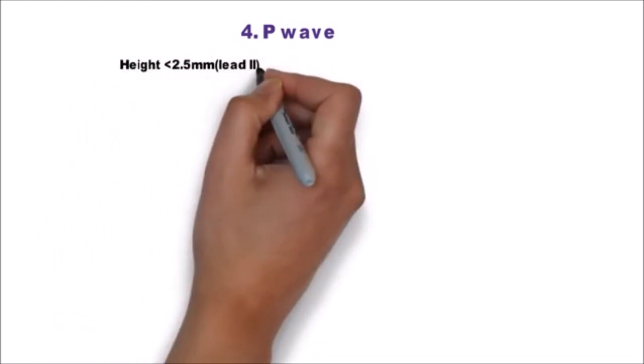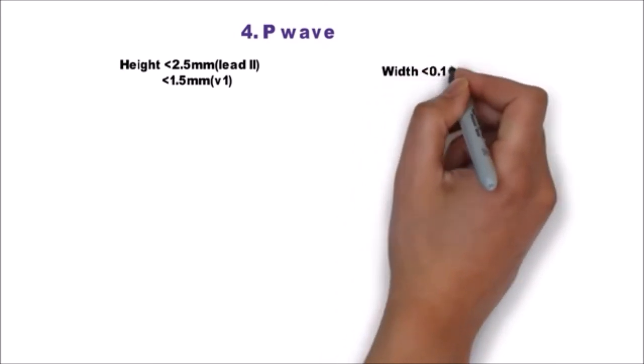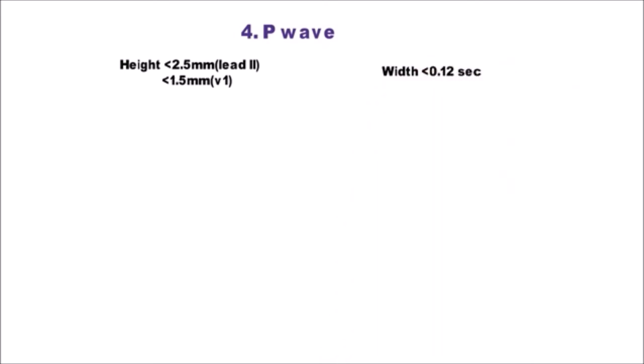Height of normal p-wave is less than 2.5 mm in limb leads and less than 1.5 mm in precordial leads, and the width should be less than 0.12 seconds.